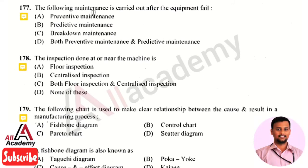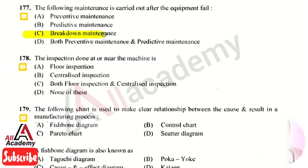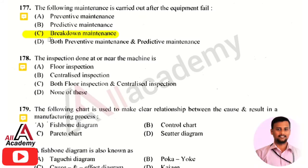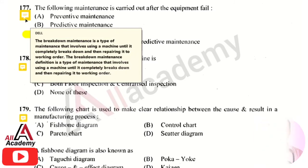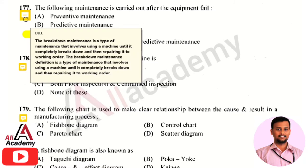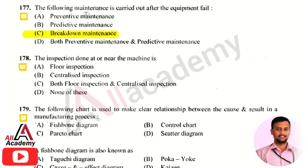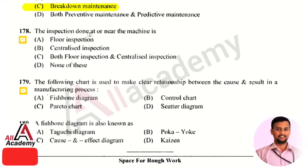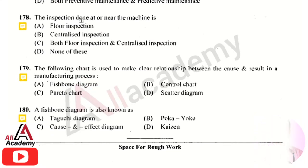The next question is: the following maintenance is carried out after the equipment fails. The right answer is option 3, breakdown maintenance. Breakdown maintenance is the type of maintenance that involves using machines until they completely break down.